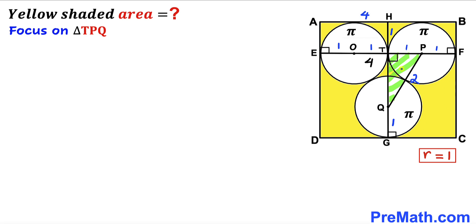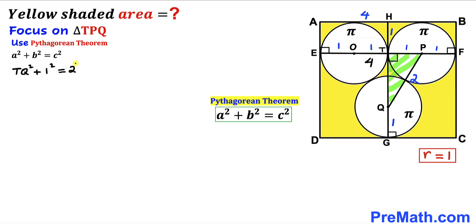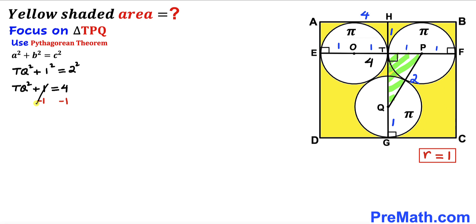Let's focus on right triangle TPQ and apply the Pythagorean theorem: a² + b² = c². Here PQ = 2 is the hypotenuse, and the other legs are TQ and 1. So TQ² + 1² = 2², giving TQ² = 4 − 1 = 3. Taking the square root on both sides, TQ = √3 units.